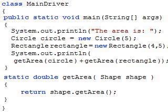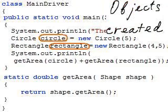First, the main driver program is invoked. It creates two objects, a circle and a rectangle, which will be used to compute the area of both objects.